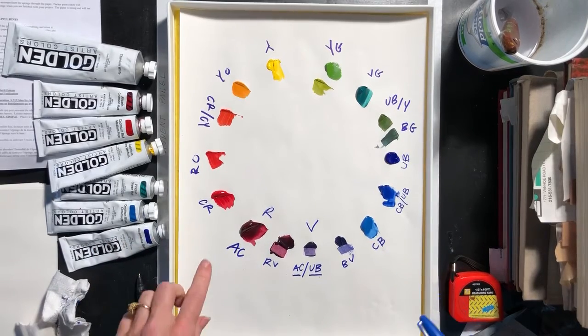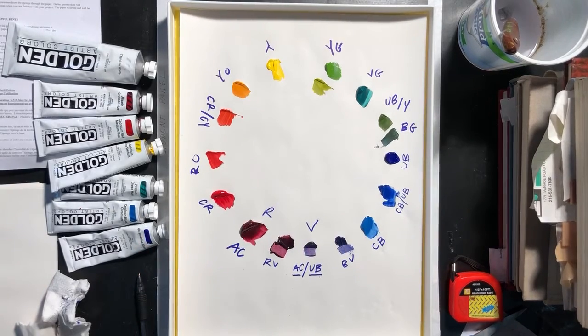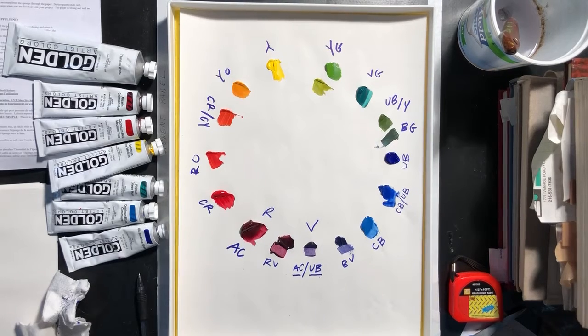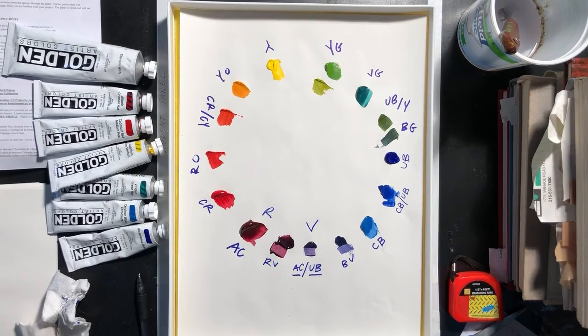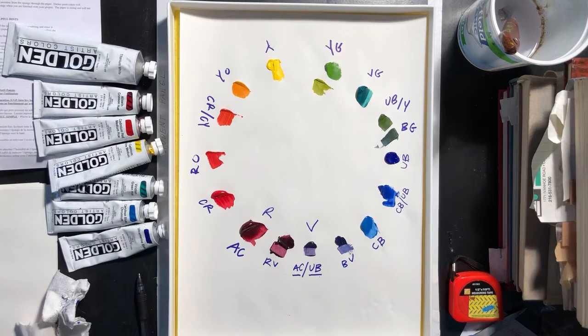So those are your primaries, your reds, your blues, and your one yellow. And primaries mean the what determines that color is a primary color is that it cannot be mixed by any two other colors. They come out of the tube. That's the way they are. They are not a color that you can mix two other colors to find.